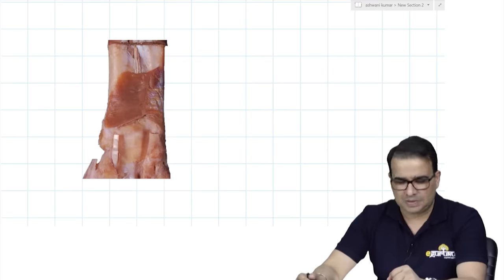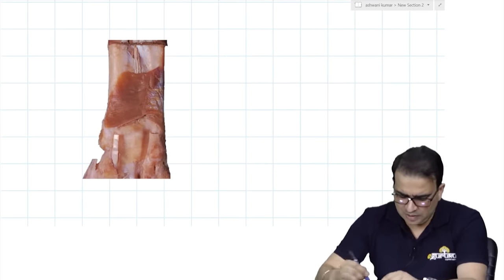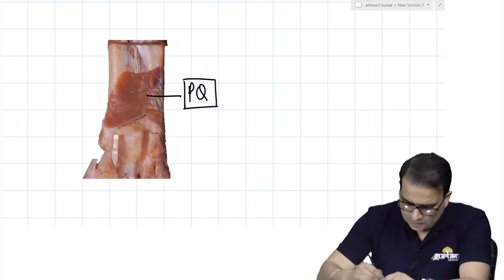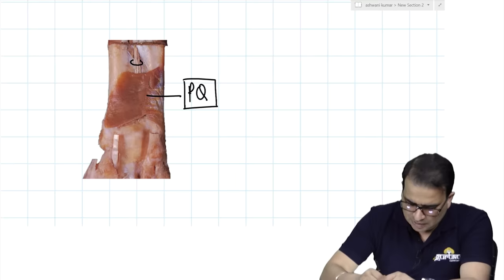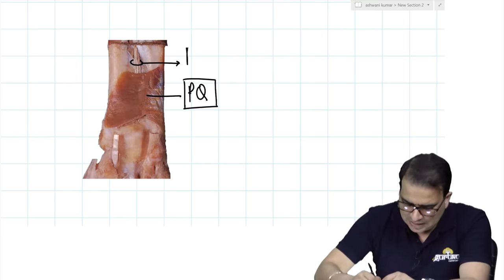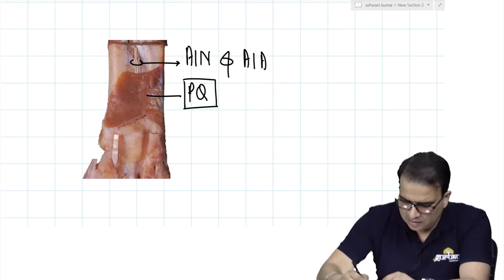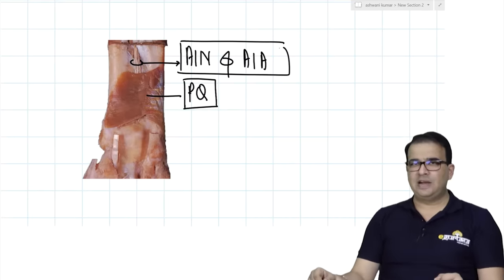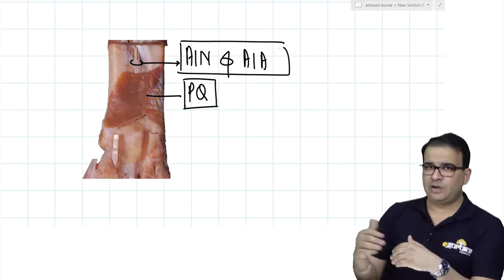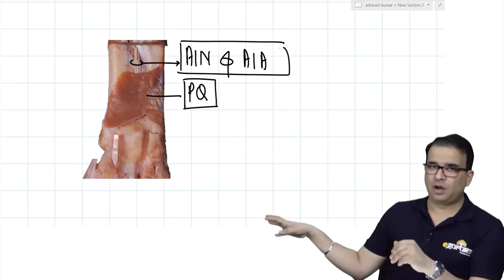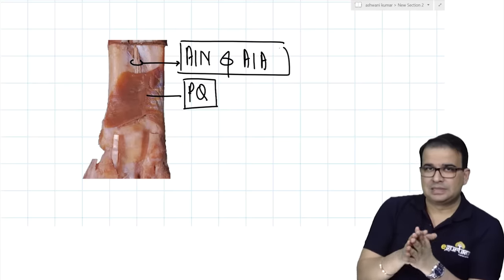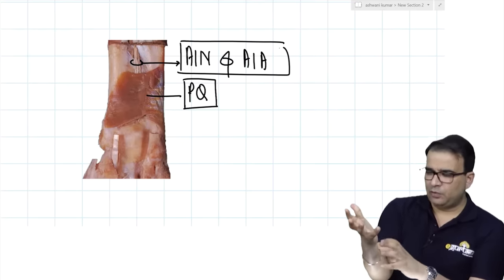To see the pronator quadratus you must remove FDP and flexor pollicis longus as well. It is a quadrangular muscle on the ventral aspect of the lower part of the radius and ulna. Running in front of the interosseous membrane is the anterior interosseous nerve and anterior interosseous artery, which pass deep to the pronator quadratus. That covers the muscles of the anterior compartment of the forearm.